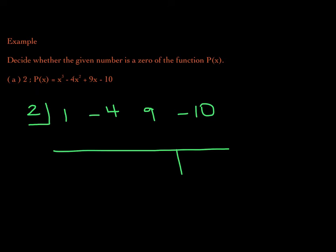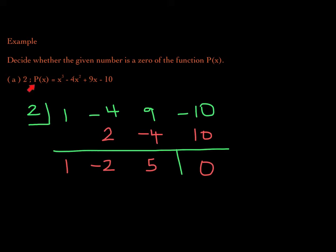Alright, let's go for it. I'm going to bring down the 1. 2 times 1 is 2. Negative 4 plus 2 is negative 2. 2 times negative 2 is negative 4. 9 minus 4 is 5. 5 times 2 is 10. Negative 10 plus 10 is 0. The fact that the remainder is 0 tells us that 2 is indeed a zero of this function p.